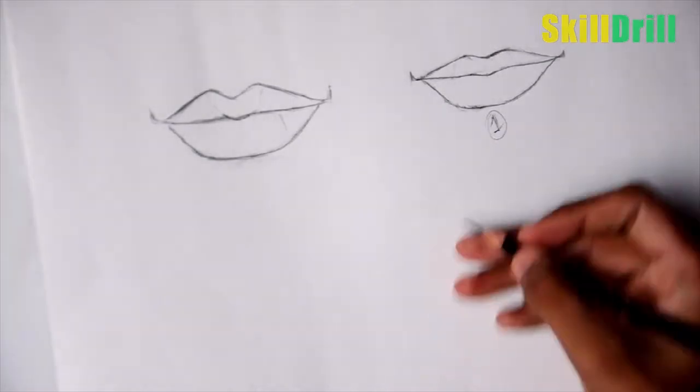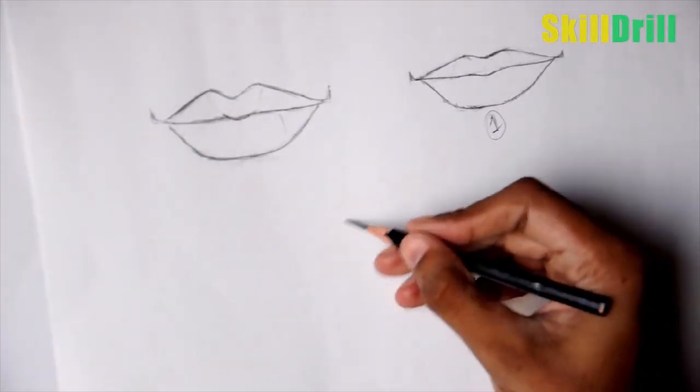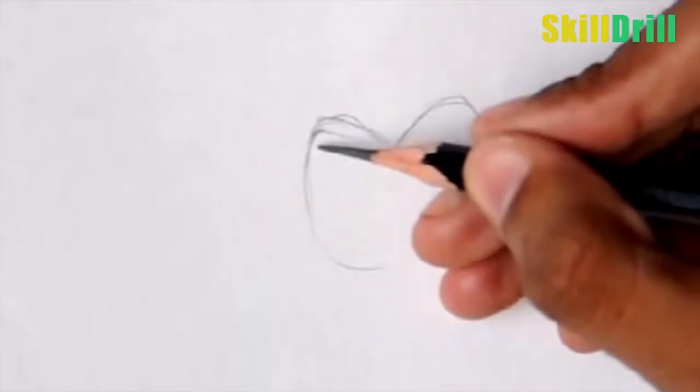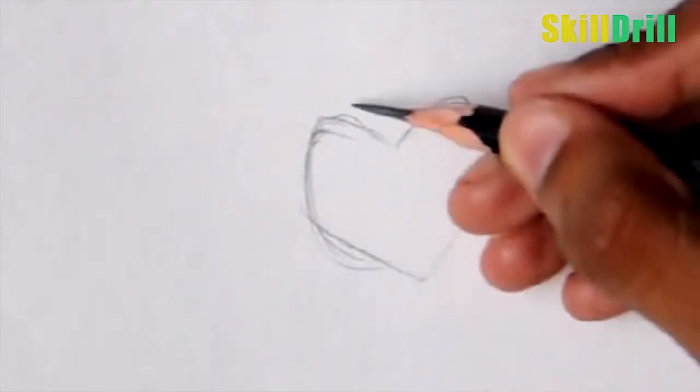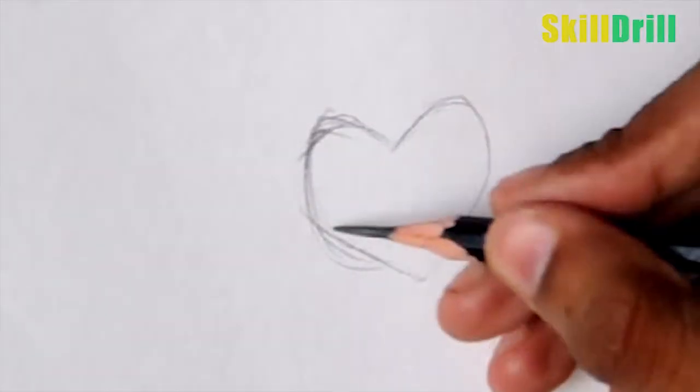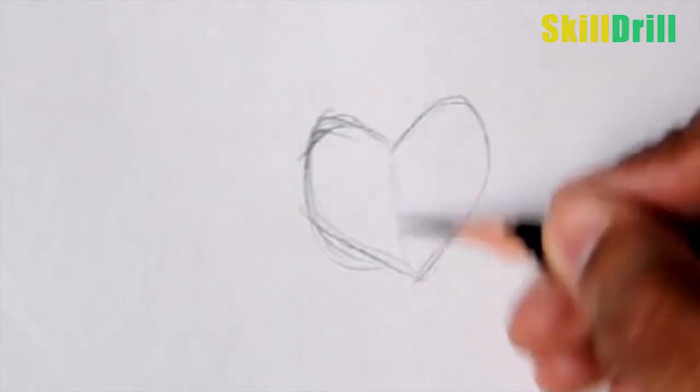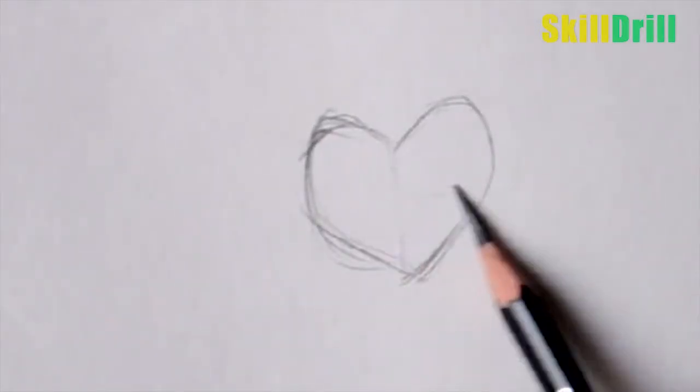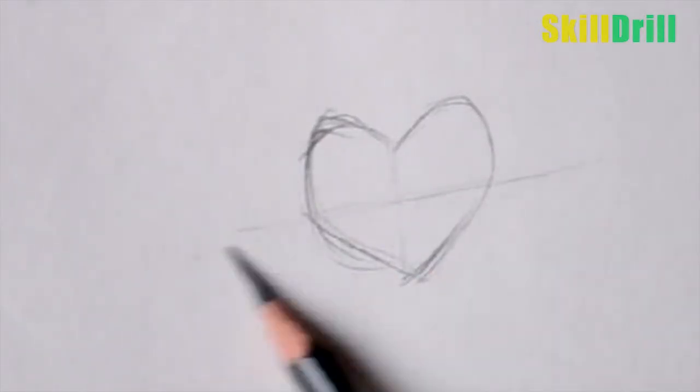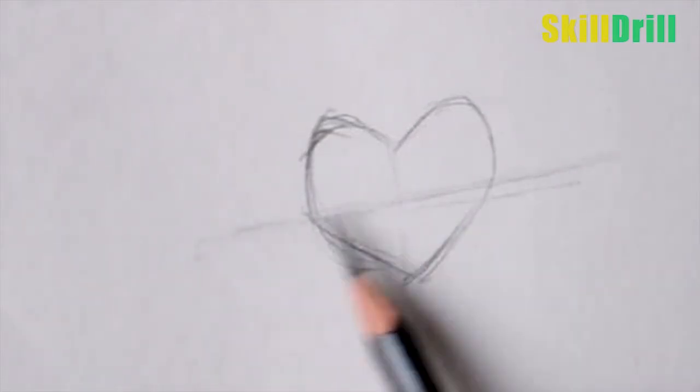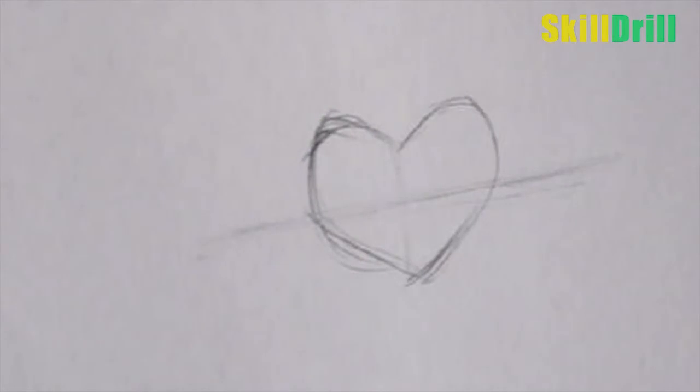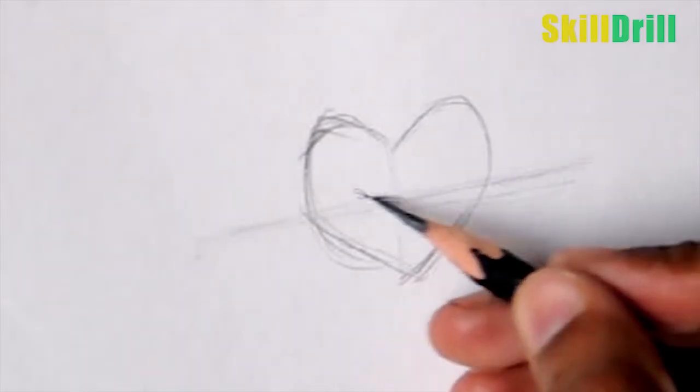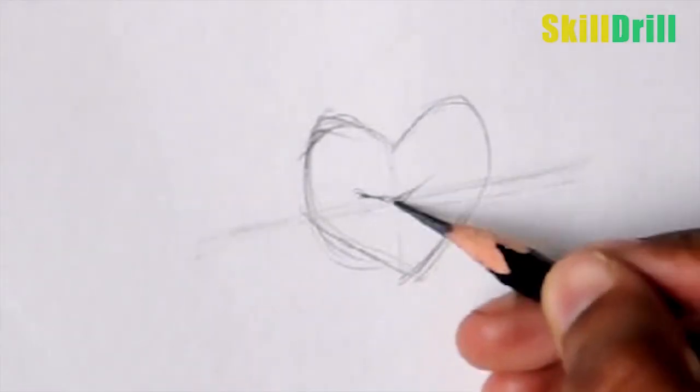Now the second technique: for that you have to create a heart. I'm pretty sure everyone here knows how to draw a heart. Draw it roughly. This part should be coming here. After doing this, break it from between with a line. Same distance here and here. Make a V-shape just below this point.